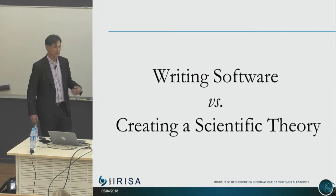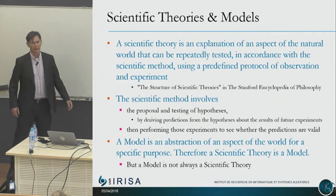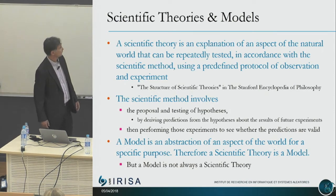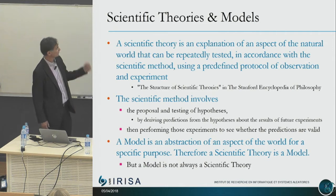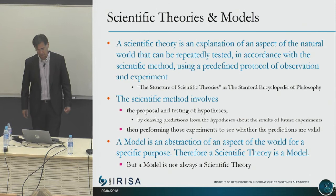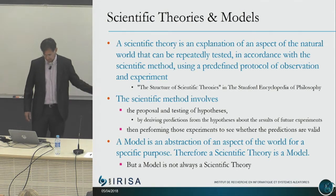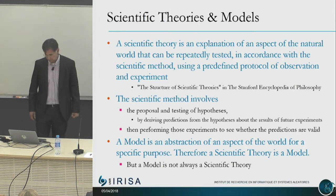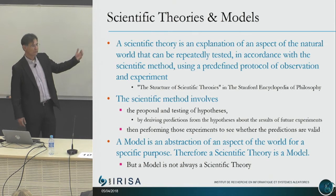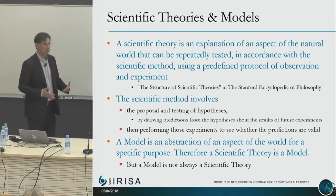I'd like to compare the process of writing software with the process of creating a scientific theory. Coming from the Stanford Encyclopedia of Philosophy, a scientific theory is an explanation of an aspect of the world that can be repeatedly tested in accordance with the scientific method using a predefined protocol of observation and experiment. The scientific method involves proposal and testing of hypotheses by deriving predictions, performing experiments to see whether predictions are valid. The notion of a model is central to scientific theory — a model is an abstraction of an aspect of the world for a specific purpose. Any scientific theory is a model.